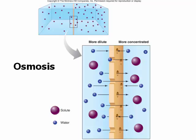Osmosis is the movement of water from an area of low solute concentration to high solute concentration. Looking at a diagram, the left side has a lower concentration of solutes and the right side has a higher concentration — water moves from left to right.